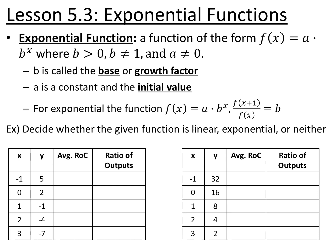If you have an exponential function, then b is equivalent to f of x plus 1 divided by f of x. Basically what that's saying is every consecutive y value, if you divide it by the previous y value, has the same ratio. So instead of a linear function where you're adding the same thing every single time, an exponential function has the same ratio — you're multiplying the same thing every single time.